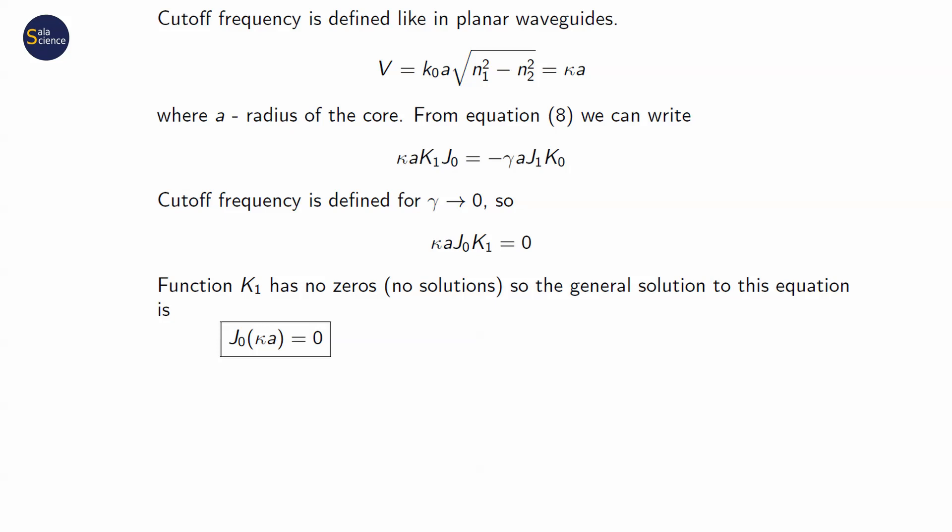If gamma approaches zero, it means that all the energy escapes from the core. Imagine that a modified Bessel function K, which describes the electric field in the cladding, behaves like the exponential function. If the exponent is zero, and it happens when gamma is zero, it means that the electric field is constant everywhere.